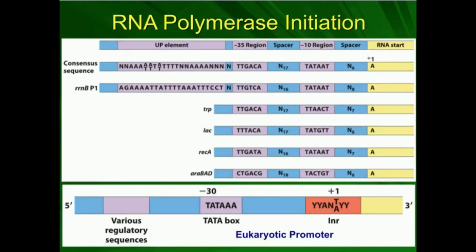Before we get into the mechanics of how RNA polymerase works, we need to understand how transcription begins. Transcription involves three main processes: initiation, elongation, and termination. Initiation is how RNA polymerase gets onto the gene to be transcribed. It's not simple — particularly in eukaryotes, a large number of proteins have to assemble to get RNA polymerase on there just right. In eukaryotes, it's astronomically more complicated.